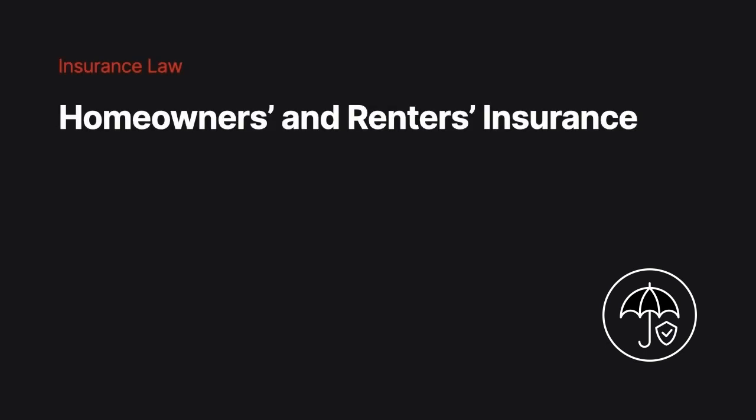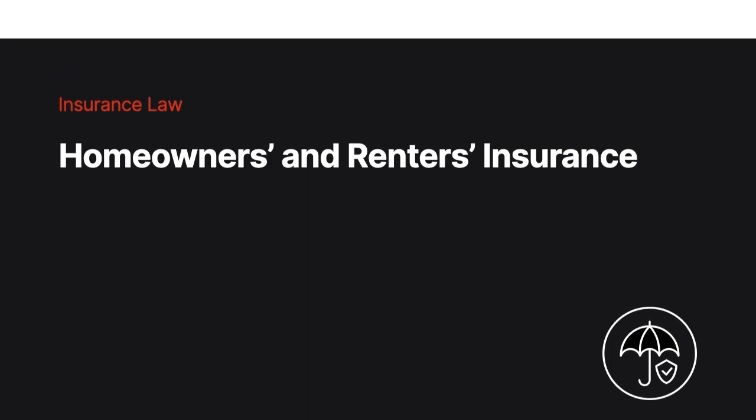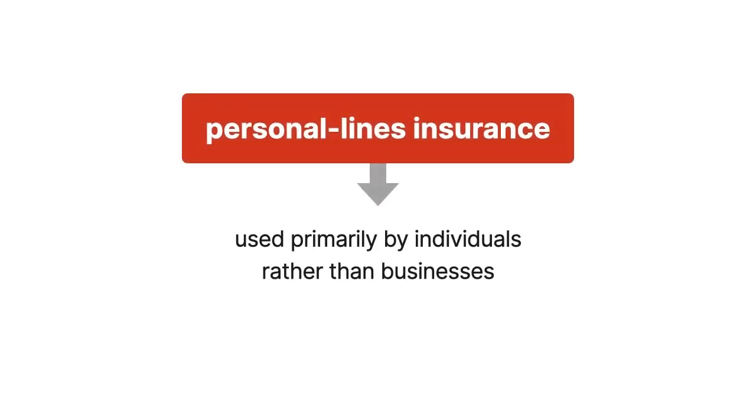Residential dwellings are insured by policies known as homeowners' and renters' policies. These policies are personal lines insurance, meaning they're used primarily by individuals rather than businesses.